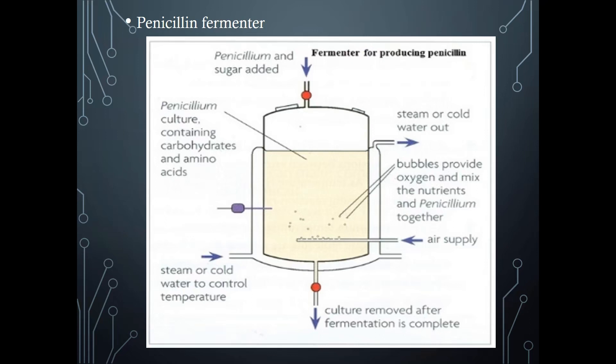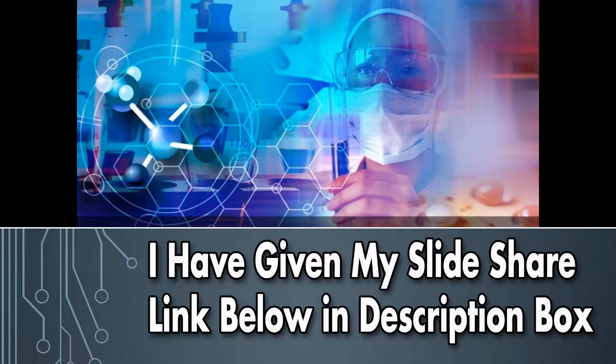Here is a picture of the fermenter producing penicillin. Through one inlet, the medium is added for fungal growth, and steam or cold water is used through another inlet to control the temperature. Through an outlet, the steam or cold water is removed. After the completion of fermentation, the culture is removed through the outlet. I hope you all understood — thank you for listening.